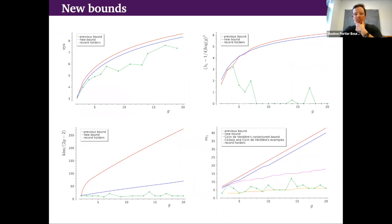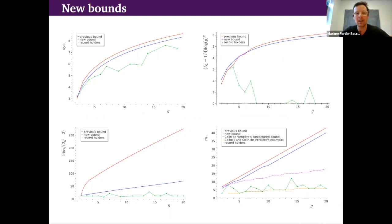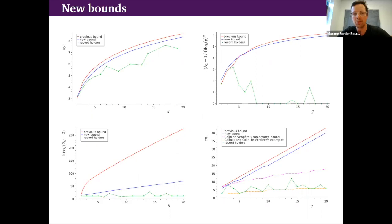How do we find new maximizers? One strategy is to try to prove new upper bounds for these invariants and hope the upper bounds are good enough to match examples. The question becomes: what are the best possible upper bounds we can prove? That's the content of the new paper with Bram, where we prove new upper bounds on all five invariants. Here I'm showing a collection of plots, one for each invariant. In red is the previous best known bound, and in blue are the new upper bounds. The new upper bounds are better than the previous ones in all genera except for a few exceptions.